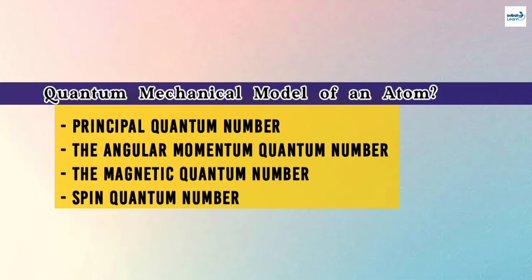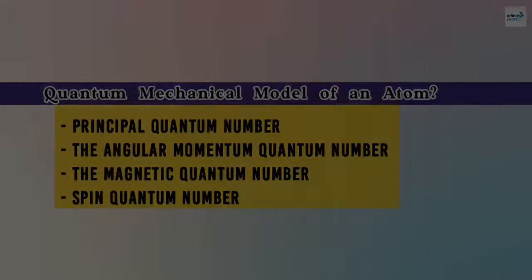So the terms are principal quantum number, the angular momentum quantum number, the magnetic quantum number and the spin quantum number. And these all numbers are the types of quantum numbers. These all terms we are going to talk about in next video.